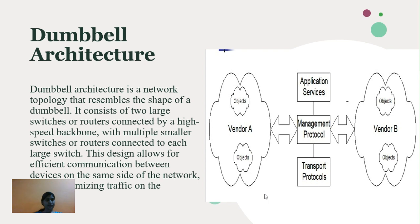Dumbbell architecture is a network topology that resembles the shape of a dumbbell. It consists of two large switches or routers connected by a high-speed backbone, with multiple smaller switches or routers connected to each large switch. This design allows for efficient communication between devices on the same side of the network.